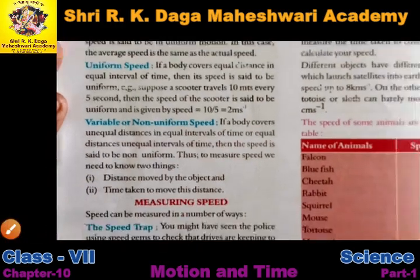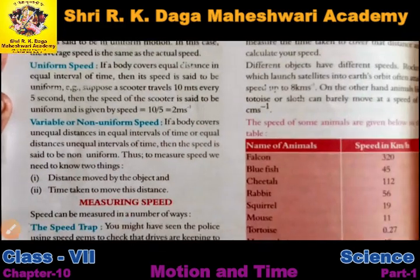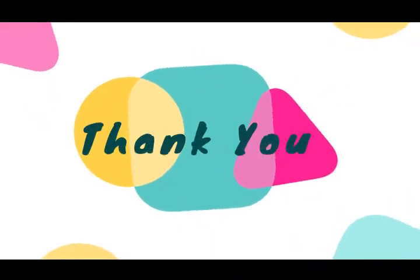So this way we can measure speed. Today we have seen the basic idea about motion, slow and fast motion, and the types of speed. That's all for today's class, students. We will study further topics in the next lecture. Thank you.